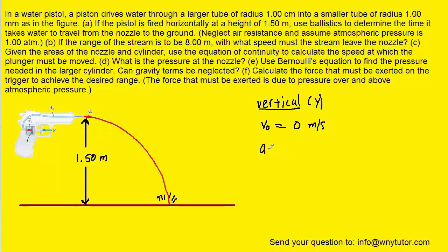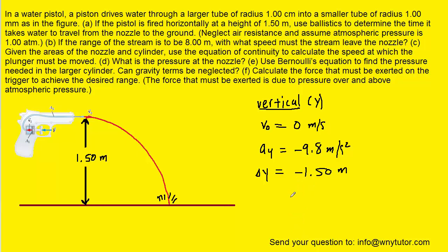We also know that the acceleration in the y direction is negative 9.8 meters per second squared, and the vertical displacement is negative 1.5 meters. We call it negative 1.5 meters because the displacement in the vertical direction is downward. We can then turn to one of the kinematics formulas to solve for the time.